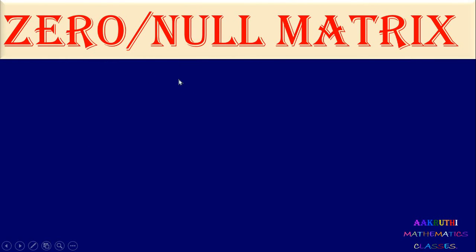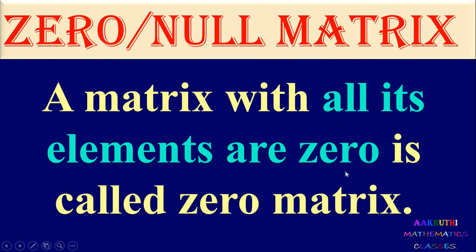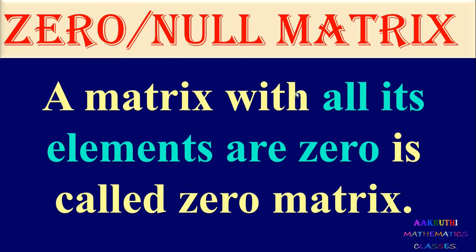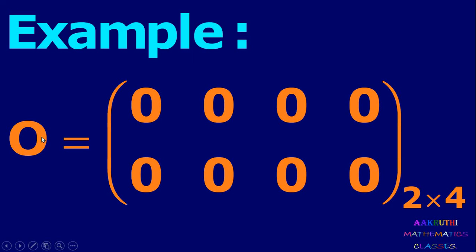Next type is zero matrix or null matrix. A matrix with all its elements equal to zero is called a zero matrix or null matrix. It is denoted by capital O. For example, O equal to [0, 0, 0, 0; 0, 0, 0, 0] — order 2 by 4 — is a null matrix of order 2 by 4.